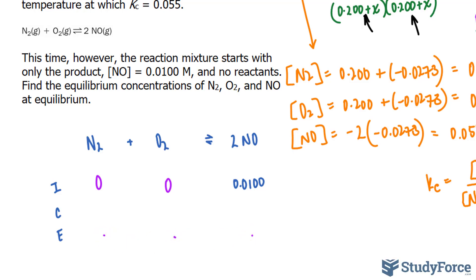The next thing that I want to do is find which direction this reaction will be occurring in, and we can do that by finding the reaction quotient. Qc is equal to the initial concentration of the products over the concentration of the reactants. So 0.0100, and that's being raised to the power of 2 because of this coefficient, over, and we have 0 times 0 in the denominator.